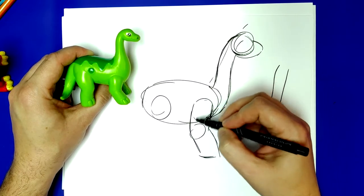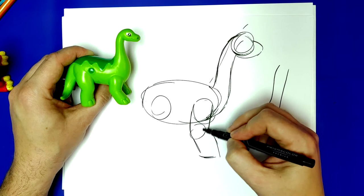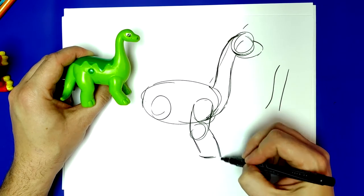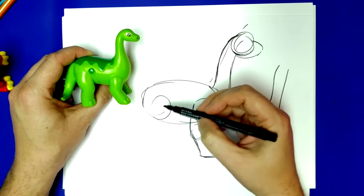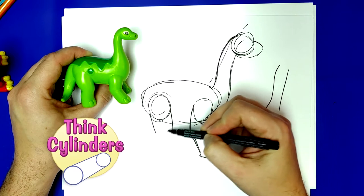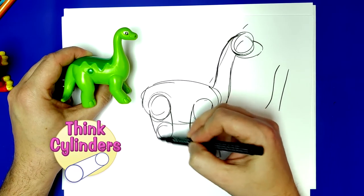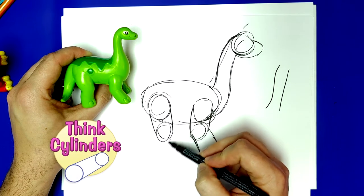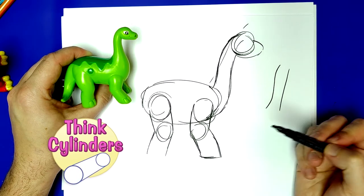So look, we have a circle and a circle. This would be his shoulder. This would be his knee, and then we come down for his foot. This would be his hip. We're going to draw two lines or a rectangle to another circle, which would be his knee. Oh, that would be his elbow. This would be his knee. Another rectangle down to his feet.